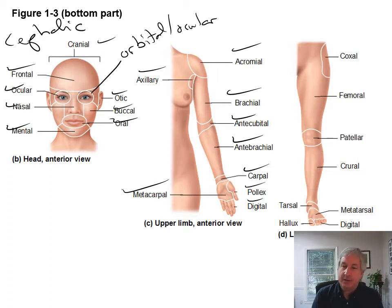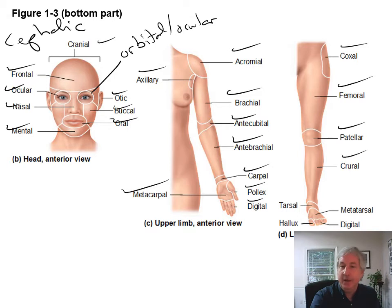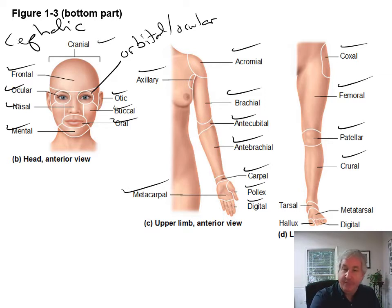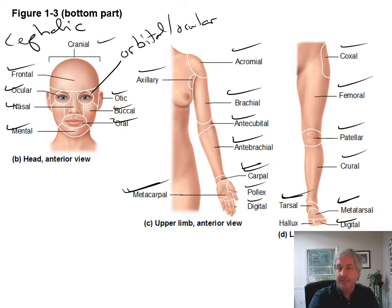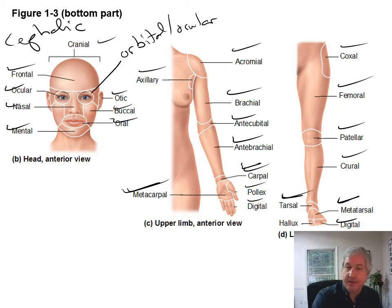The thumb has its own special name — it's called the pollux. For the lower limb, we have the coxal region — that's the hip. Femoral region is the thigh, with the femur bone inside. Patellar region is the kneecap. Crural region is the front of the leg, the lower part of the lower limb. The back part is the sural region — the calf. Tarsal region is the ankle. Pedal region is the foot. The digital region refers to all of the toes, and the big toe is called the hallux.